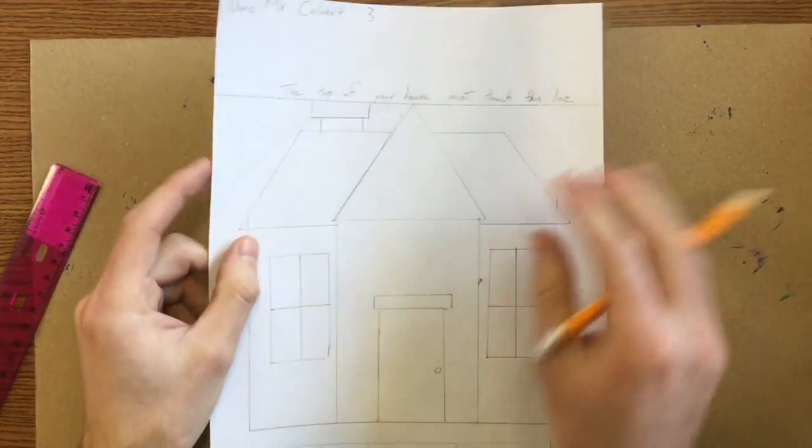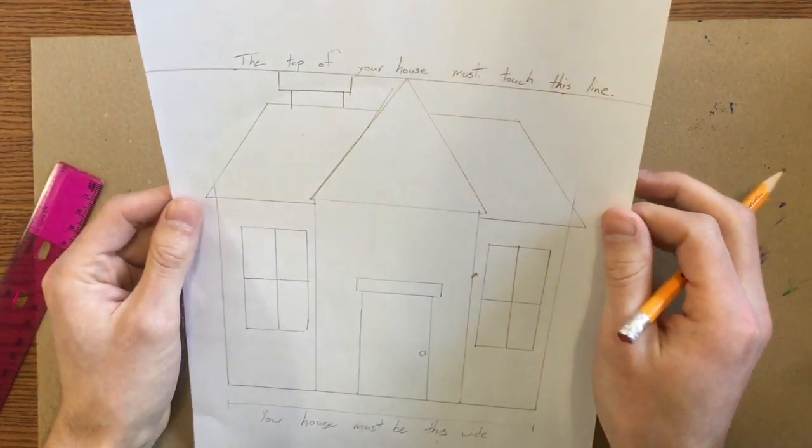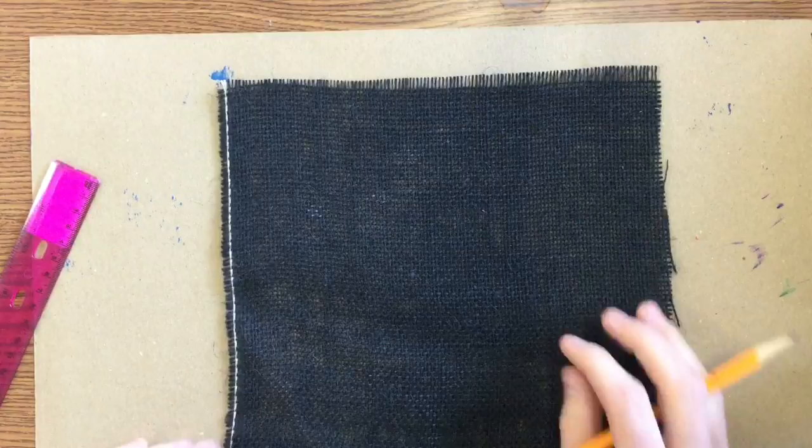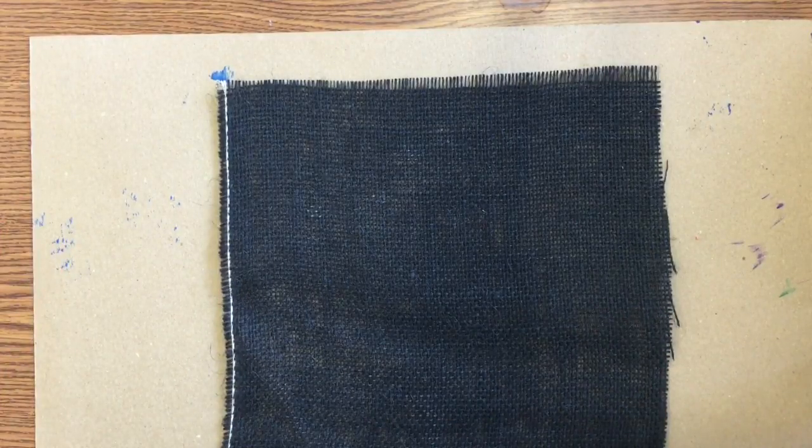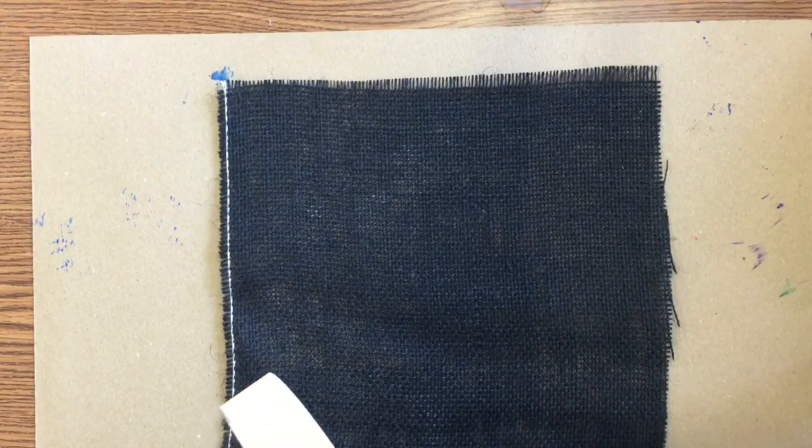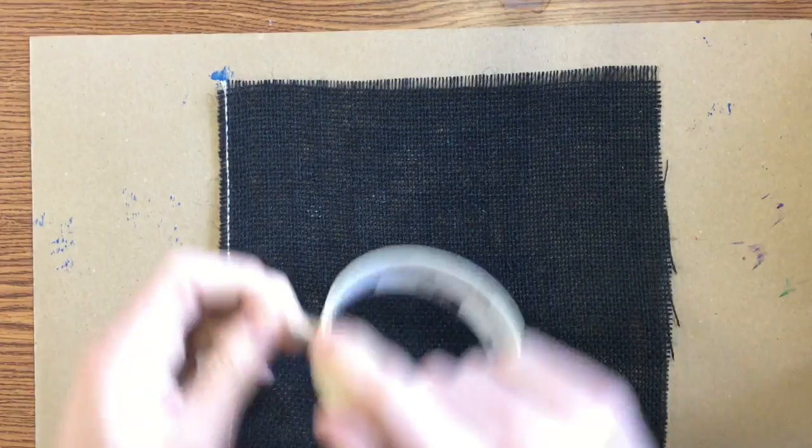After you've drawn your house, you're going to bring it up and you're going to show it to me. After I have okayed it, then you're going to go up and get one piece of burlap from up front. They're three different colors. Then you're going to use some tape to tape off the edges. This part's kind of tricky so I might need to help you.